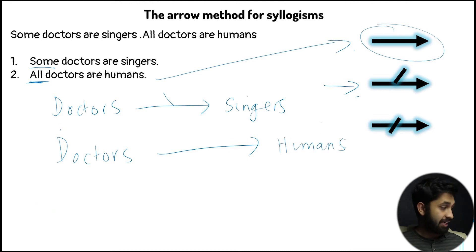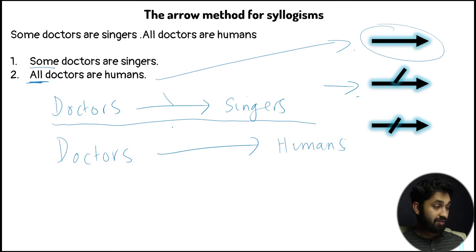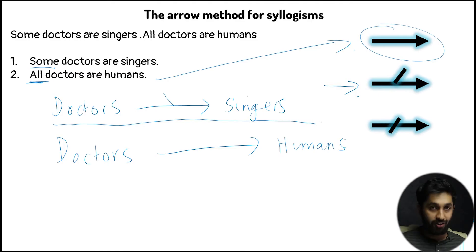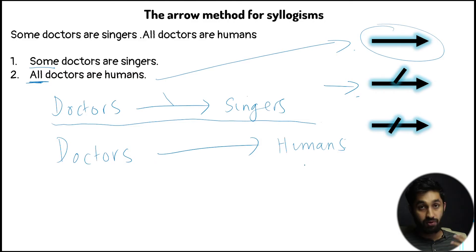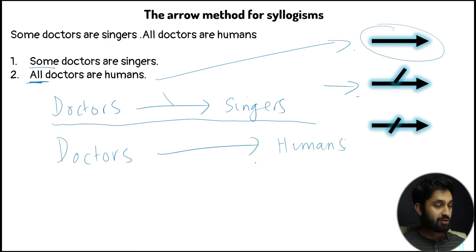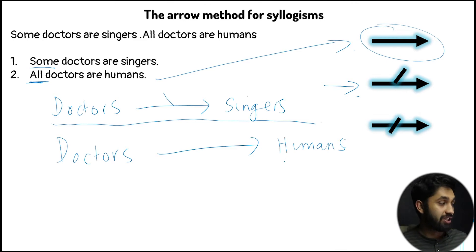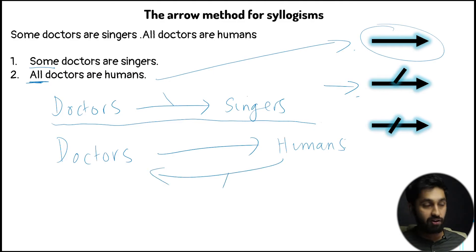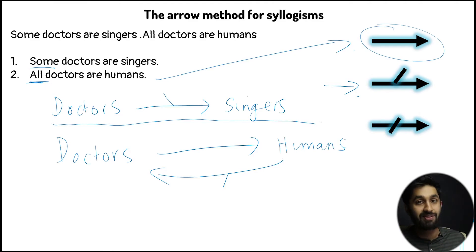Looking at these two diagrams: 'some doctors are singers' — and the reverse can also hold, so some singers are doctors. For 'all doctors are humans', we know that all doctors are humans, but are all humans doctors? We haven't been given enough information to say that, but we can say that some humans are doctors, because all doctors are humans.